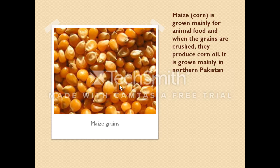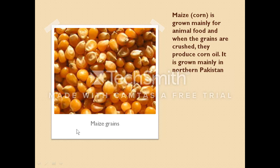Here we have maize. Maize is corn. Maize is grown mainly for animal food, and when the grains are crushed they produce corn oil. It can also be eaten by humans — the raw grains are very tasty, and when they're roasted they're even tastier, crunching beneath your teeth. Maize is grown mainly in northern Pakistan, and most people here sell corn and maize grains.